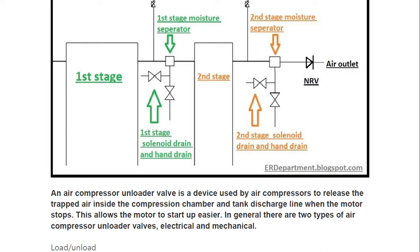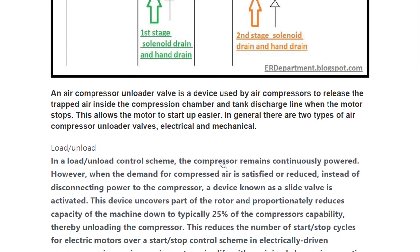When we release this trapped air, the motor can start up more easily the second time, otherwise there can be a deadlock situation where you will not be able to start the air compressor. Releasing this excess air allows the motor to draw less current. In general, there are two types of compressor unloaders: electrical and mechanical.